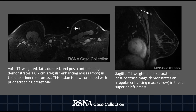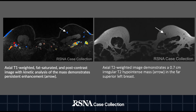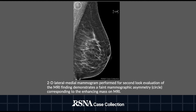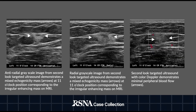Her screening breast MRI demonstrated a new 0.7 cm irregular enhancing mass in the upper inner left breast. The mass showed persistent enhancement kinetics and T2 signal hypointensity. Following the screening breast MRI, MRI-directed diagnostic mammogram and ultrasound were performed. Mammogram demonstrated a faint asymmetry only visualized on the LM and MLO views. Ultrasound demonstrated a mixed echogenicity mass with minimal peripheral blood flow corresponding to the irregular enhancing mass on MRI.